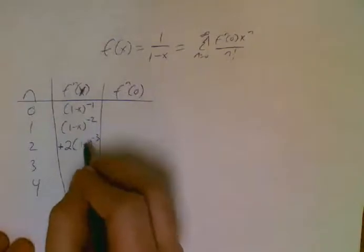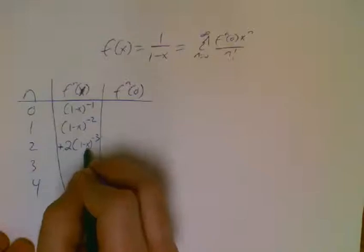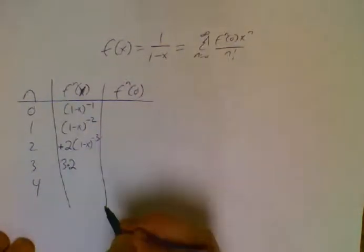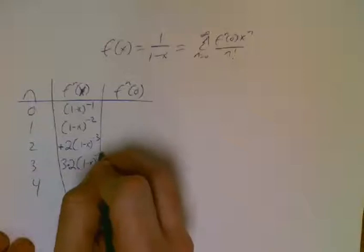Again, negative 3 times 2, 1 minus x to the negative 4 times negative 1 kicker is positive. I'm going to write it as 3 times 2 just like I did before instead of 6, 1 minus x to the negative 4.